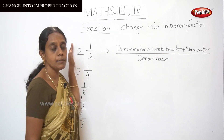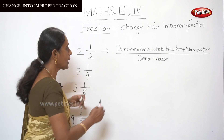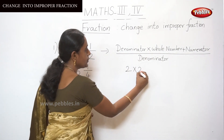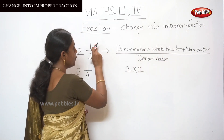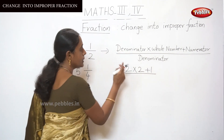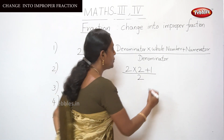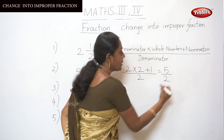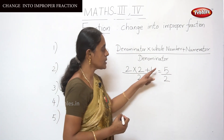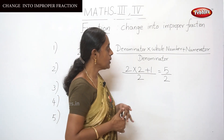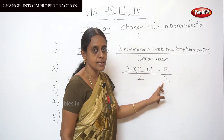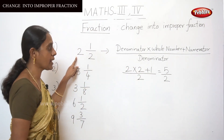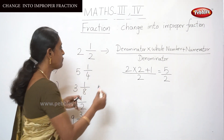Let me apply this formula to the first sum: 2 and 1 by 2. The denominator is 2, multiplied by the whole number 2, plus the numerator 1, divided by the denominator 2. That gives us: 2 × 2 = 4, and 4 + 1 = 5, so the answer is 5 by 2. Observe this fraction — 5 by 2 is an improper fraction because the denominator is smaller than the numerator. Thus, we have changed this mixed fraction into an improper fraction. This is the answer for the first sum.